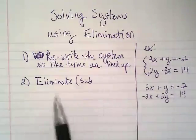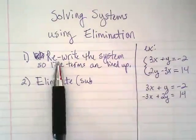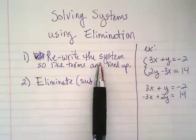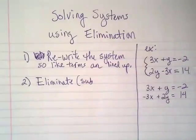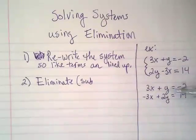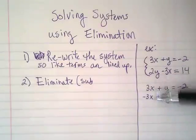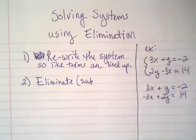Okay, so just a quick review to catch up the recording. Our first step when we get a system is to rewrite it if we need to, to line up the like terms. So this was our system, and we've rewritten it here to make the x's lined up and the y's lined up.